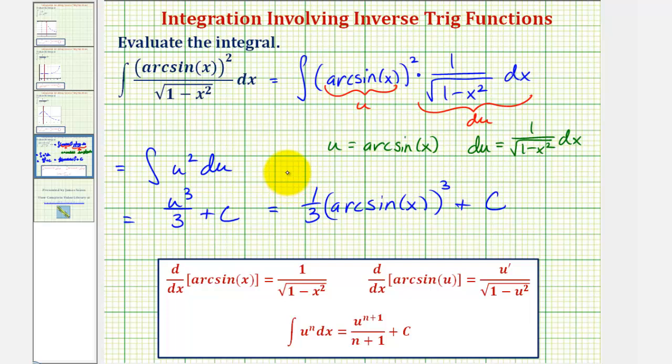This would be our antiderivative function, which means the derivative of this function is equal to the integrand function, arc sine x raised to the second, divided by the square root of the quantity one minus x squared. I hope you found this helpful.